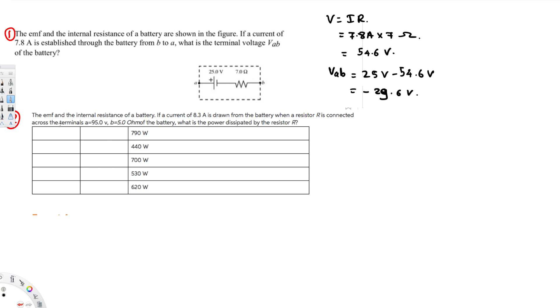Let's look at the second question. The EMF and the internal resistance of a battery. If a current 8.3 ampere is drawn from the battery when the resistor R is connected across the terminal, a 95 volt of the battery, what is the power displayed by the resistor?